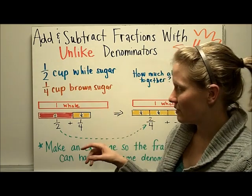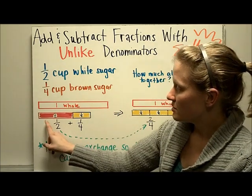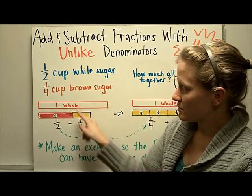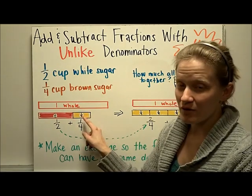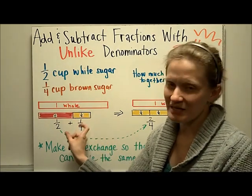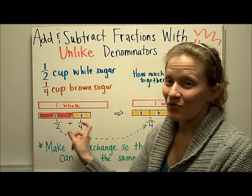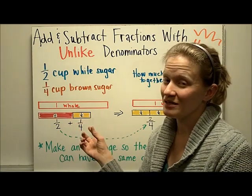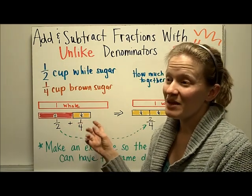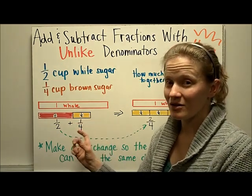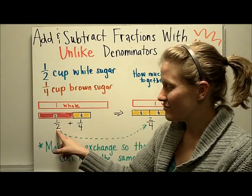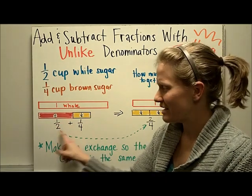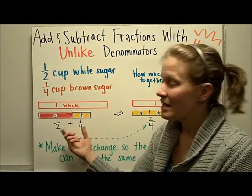It helps to visualize fractions as we go through. Here's the one-half cup of white sugar and here's the one-fourth cup of yellow sugar, and we've stuck them together. But we've learned that we can only add fractions if the denominators are the same, and right now we don't know what to call this fraction when we see halves and fourths in the same thing.